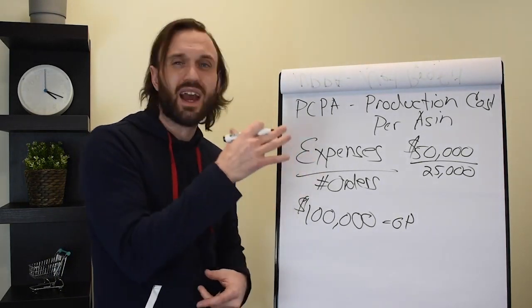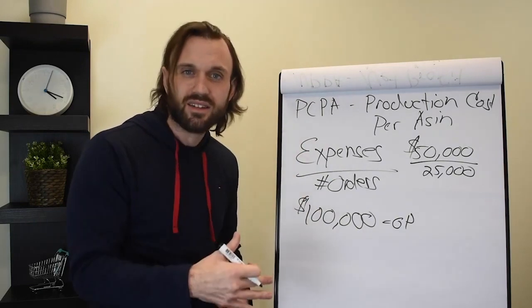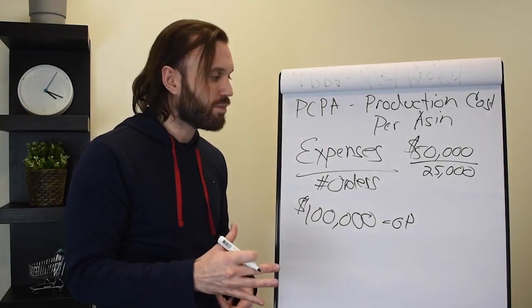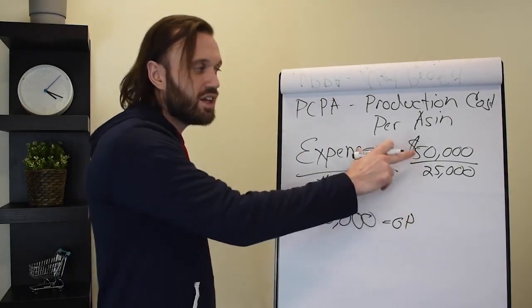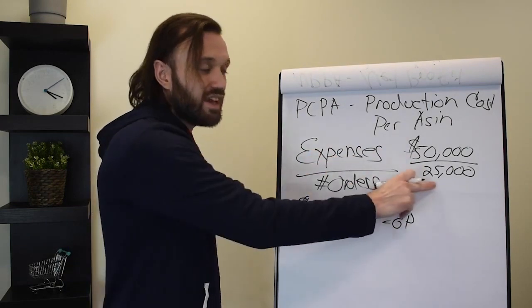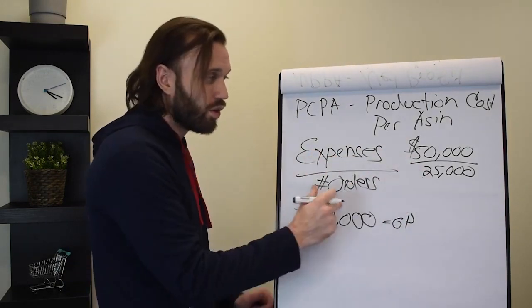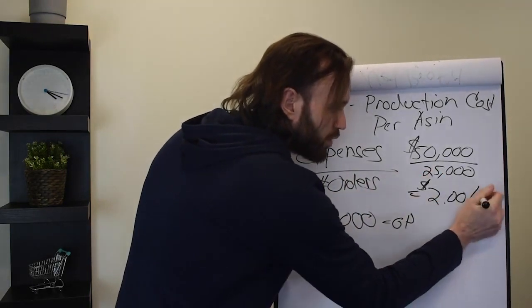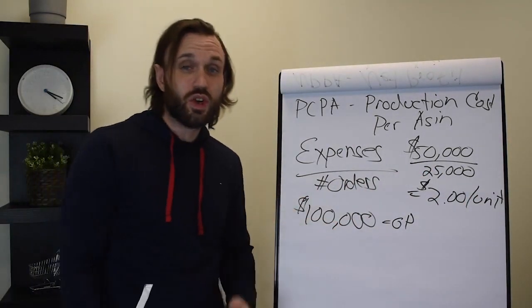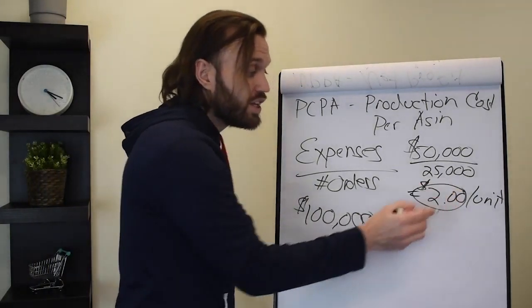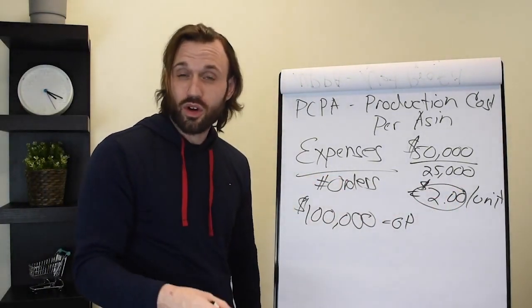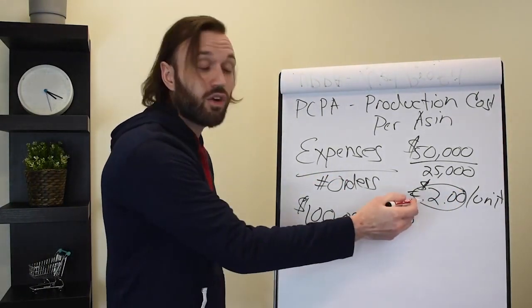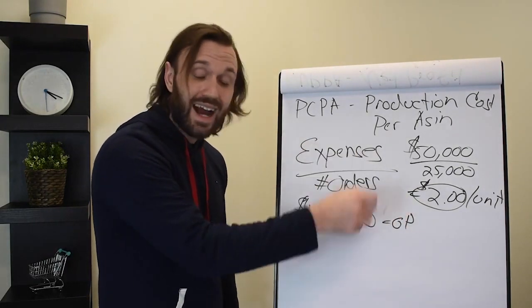It's super important to have this number, your PCPA. It's a game-changer. Production cost per ASIN will revolutionize the way you operate. Here, $50,000 in expenses divided by 25,000 in orders equals $2 per unit. So it costs you $2 a unit just to get the product out the door, just to produce that product. You've got to know this information.